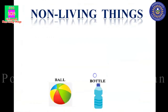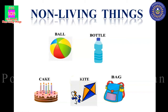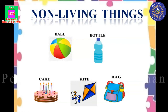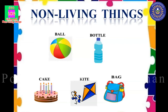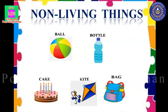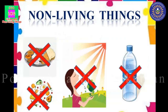Ball, bottle, cake, kite, bag. All these things are non-living things. A ball, a cake, a bottle, a bag, a kite do not need food, water or air. They are called non-living things.